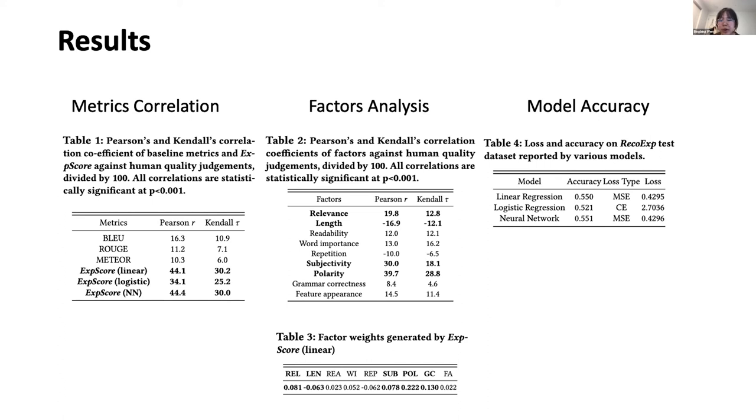We compared the factors with the human judgment and calculated the Pearson and Kendall correlations. We find that polarity and subjectivity have strong correlation with human assessment, indicating better explainability when explanations have high relevance and high emotion preference. Table three shows the importance of all factors generated by the ExpScore. We can see polarity, subjectivity, and relevance are the top essential factors among the linear weights. We find that it is consistent with the correlation strength in terms of positive and negative relationships.